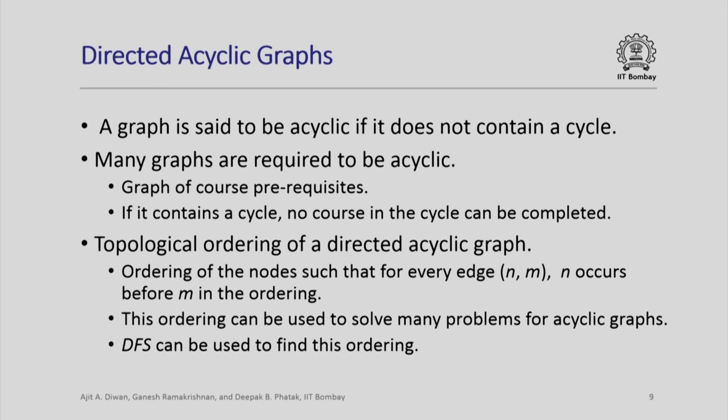We can use similar ideas for many other problems on graphs. Consider what is called a directed acyclic graph, or DAG — a graph that does not contain a cycle. Many graphs in real applications are required to be acyclic. For example, a graph of course prerequisites cannot have a cycle, because that would mean no course in the cycle could ever be started. A key property of such graphs is a topological ordering: an ordering of the nodes such that for every edge from n to m, node n occurs before m in the ordering. This ordering can be found using depth-first search.